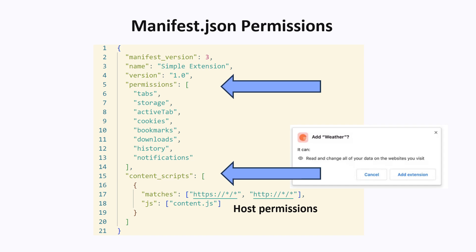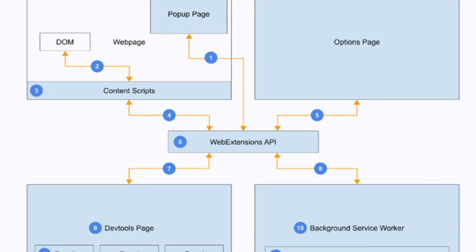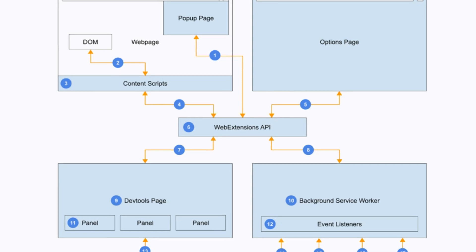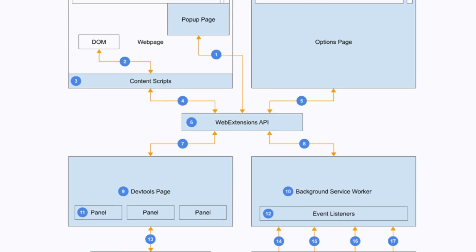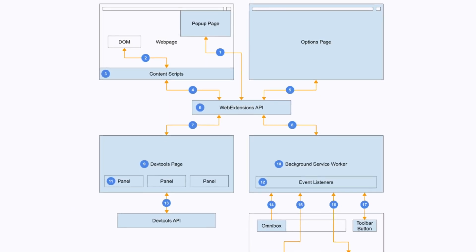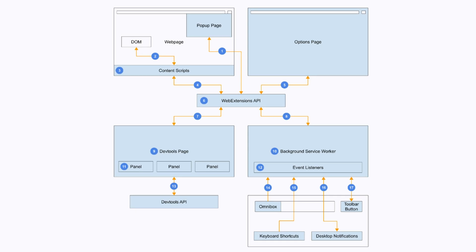So far, this is pretty straightforward — a Chrome extension has permission to some things and not other things. But now is where it gets interesting. A Chrome extension is actually made up of many different parts, and each part has a different set of permissions. Let's talk about the main parts of a Chrome extension.